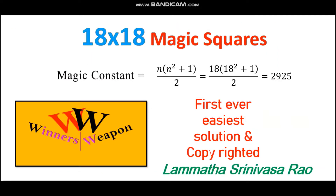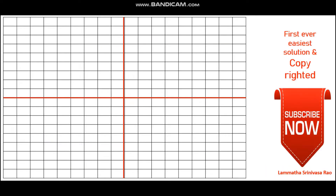For an 18 by 18 magic square, we need a magic constant — that is the minimum basic knowledge required. Upon solving the formula by substituting 18 in place of n, we get 2925. This is the magic constant.